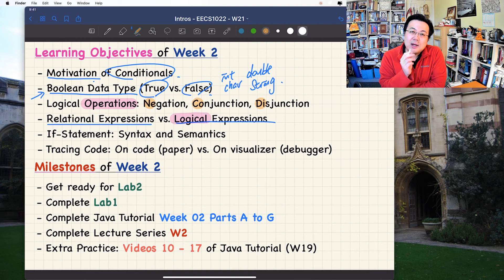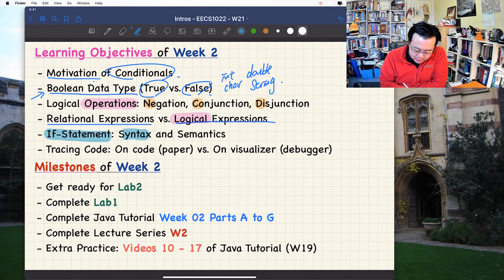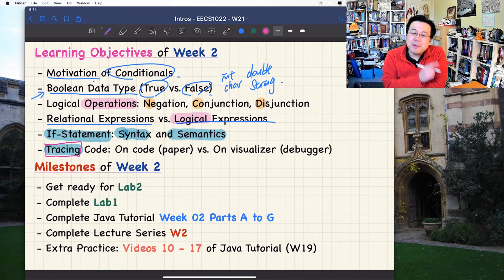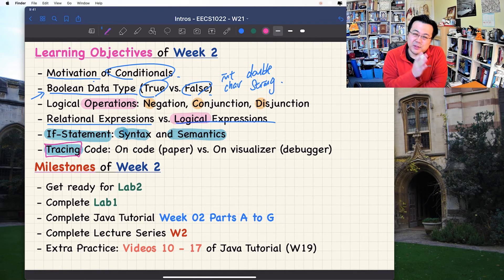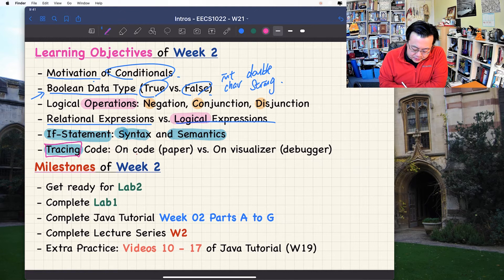I'll try to do this consistently every week to make sure you get it. We're going to talk about if-statements, the syntax and its meaning, the semantics. Then we'll talk about how you can trace the code. Tracing the code is a very important technique to pick up for this course. It's going to be beneficial not just for the first year, but for the second, third, or even after your graduation. On the code and also on the visualizer, the debugger.